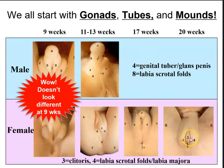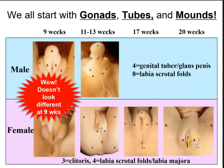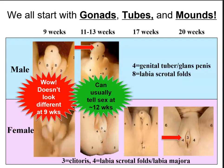At 17 weeks and by 20 weeks, we definitely have a pretty obvious female reproductive external anatomy, with the clitoris labeled three and the labial folds at number four. We can usually identify the sex of the fetus at about 12 weeks, when we can see some obvious external reproductive structures.